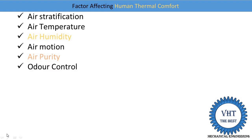The next factor is odor control. Air can contain gases, fumes, and smoke which produce particular odors and make humans uncomfortable. Some smells are not comfortable for the human body. We require complete odor control in air conditioning systems. Some chemical sprays and air purifiers are used to maintain odor control of the air.